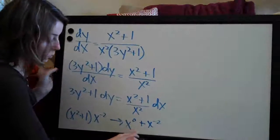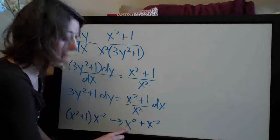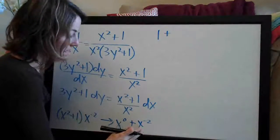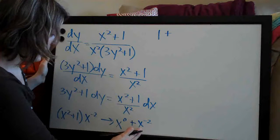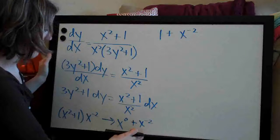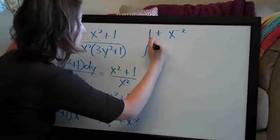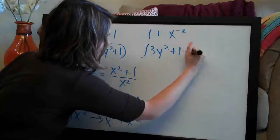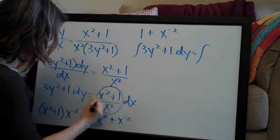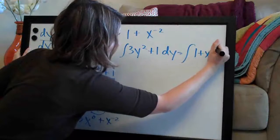We can simplify further: anything raised to the power of 0 is 1, so x to the 0 is 1. That gives us 1 plus x to the negative 2. So I've simplified the x side, and now we set up the integrals: the integral of 3y squared plus 1 dy equals the integral of 1 plus x to the negative 2 dx.